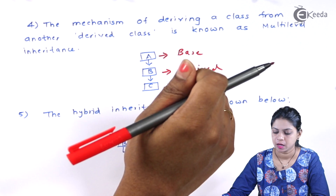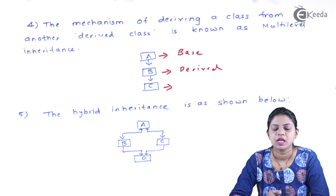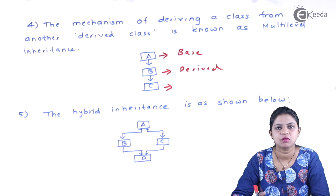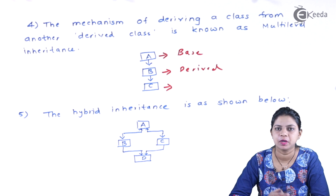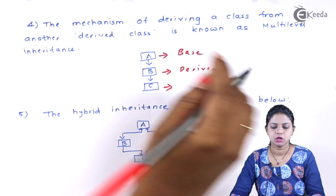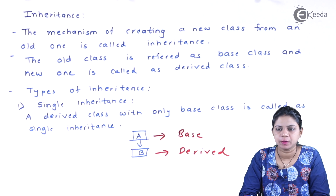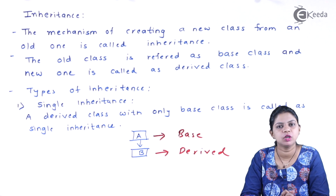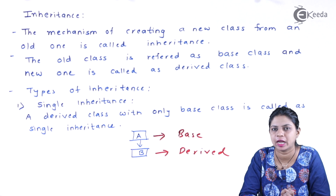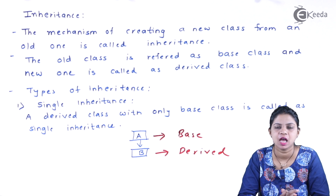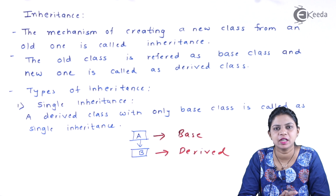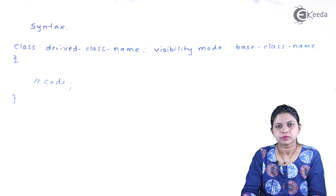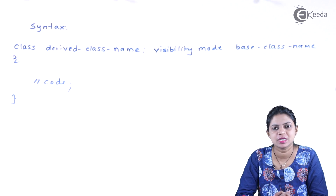The last type is hybrid inheritance. In hybrid inheritance, it involves more than one type of inheritance. Whenever a program has more than one inheritance in it, I call it hybrid inheritance. To summarize: the mechanism of creating a new class from an already existing class is called inheritance. The old class is the base class and the new class is the derived class. Types include single, multiple, multi-level, hierarchical, and hybrid inheritance. Now let us jump to the syntax of inheritance.